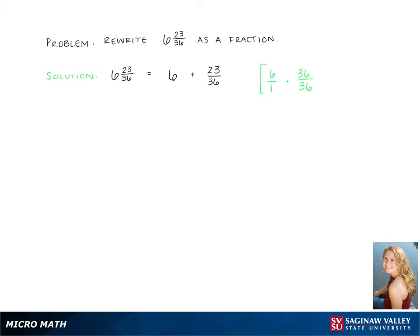Now we need the denominators to be the same. So we see on the right hand side that the 6 really has an invisible 1 under it. So we need to multiply it by 36 over 36 to make it the same as 23 over 36.